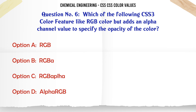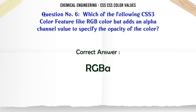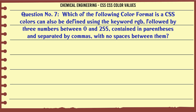Which of the following CSS3 color features is like RGB color but adds an alpha channel value to specify the opacity of the color? A: RGB. B: RGBA. C: RGBA. D: alpha RGB. The correct answer is: RGBA.